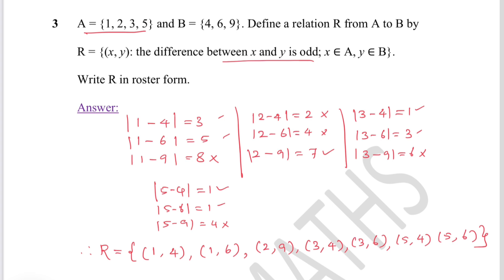Question 3: A = {1, 2, 3, 5} and B = {4, 6, 9}. Define a relation R from A to B where the difference between x and y is odd. Take the first element of A, which is 1: |1-4| = 3 (odd, possible), |1-6| = 5 (odd, possible), |1-9| = 8 (even, not possible).